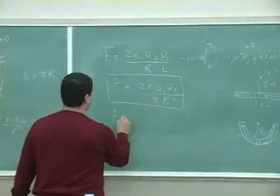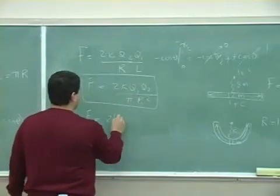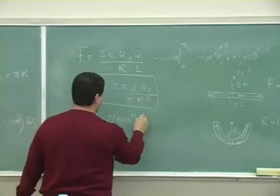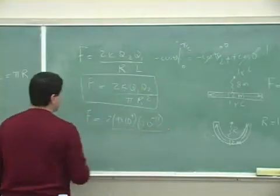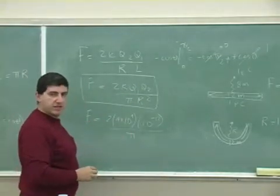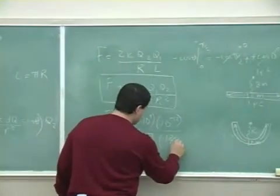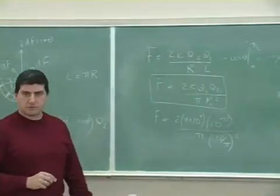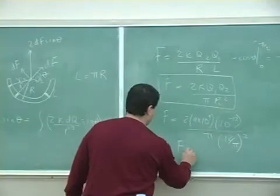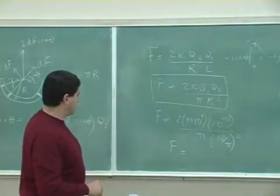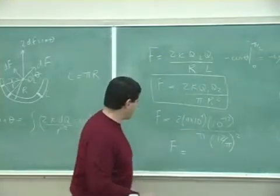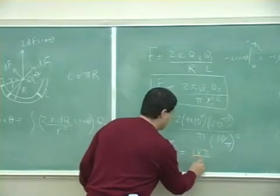So putting in the numbers: 2 times 9×10⁹, both charges are 1 microcoulomb so that's 10⁻¹², divided by pi times the radius which is 12 divided by pi, squared. Working through this, 18 comes out and one of the pi's cancels, giving 18 pi divided by 144.